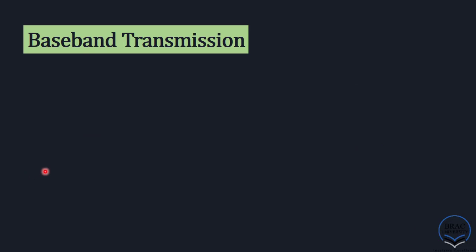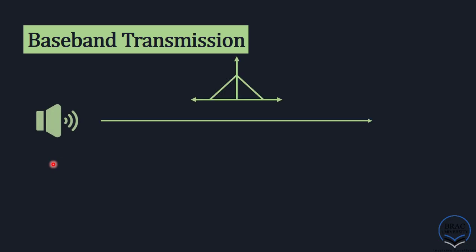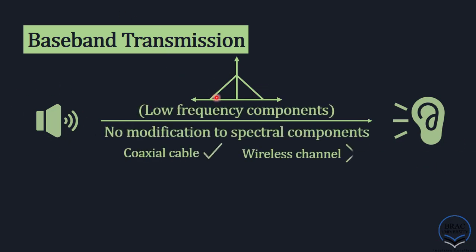Let us know a bit more detail about baseband transmission. Baseband is the frequency band of the original message signal from the source. Most baseband signals such as audio and video contain significant low-frequency components. The baseband bandwidth is equal to the highest frequency of the baseband signal. Here, a signal in its raw form is transmitted from the source to the listener. This signal has low-frequency components — for example, in the case of human speech, the highest frequency may be 4 kHz. The signal is transmitted without any modification to its spectral components.